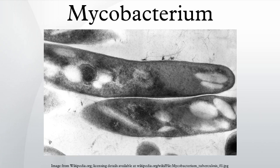Other slowly growing clades include the Mycobacterium gordonae clade (M. asiaticum, M. gordonae), the Mycobacterium kansasii clade (M. gastri, M. kansasii), the Mycobacterium nonchromogenicum terrae clade (M. hiberniae, M. nonchromogenicum, M. terrae, M. triviale), mycalactone-producing mycobacteria (M. ulcerans causing Buruli ulcer, M. pseudoshottsii, M. shottsii), and the Mycobacterium simiae clade (M. triplex, M. genavense, M. florentinum, M. lentiflavum, M. palustre, M. kubicae, M. parascrofulaceum, M. heidelbergense, M. interjectum, M. simiae).